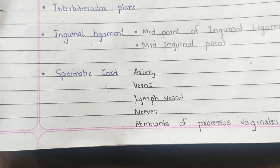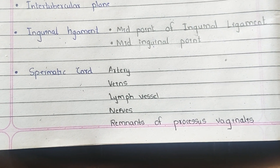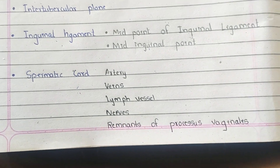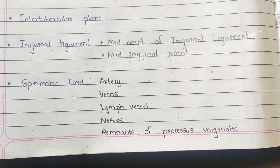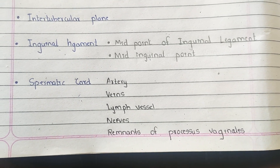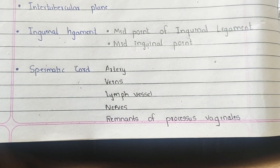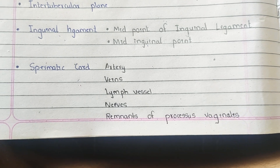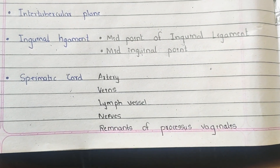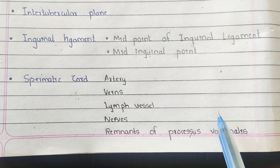Along with the ductus deferens, also known as vas deferens, the spermatic cord contains arteries, veins, lymph vessels, and nerves. The arteries include the testicular arteries, arteries to ductus deferens, and cremasteric arteries. Veins include the pampiniform plexus of veins, which is the plexus formed around the testis. Lymph vessels from the testis and nerves include the genital branch of the genitofemoral nerve and visceral afferent nerves around the testis.